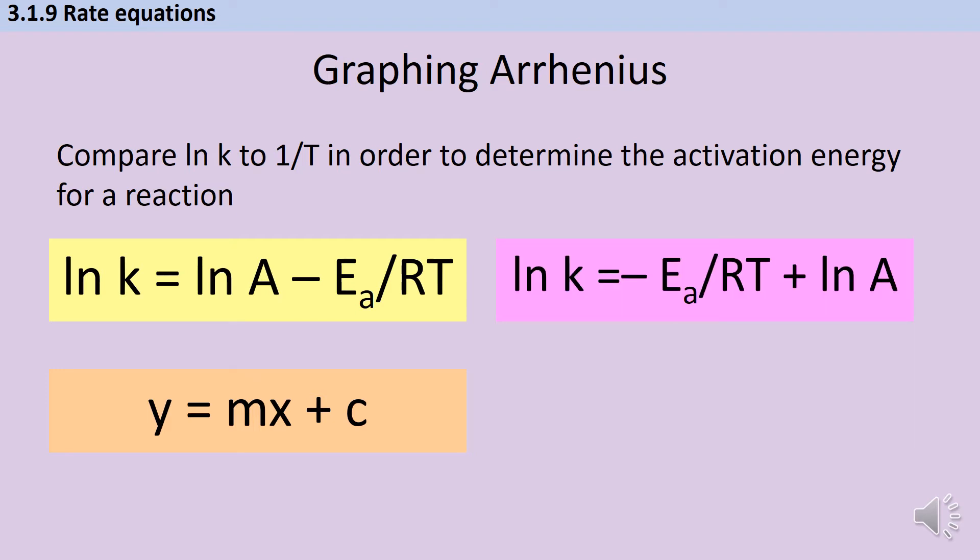We now make that natural log of k is negative activation energy over RT plus the natural log of A. You can see there that the natural log of A is going to be your c term, it's going to be your intercept term. And then if we use 1 over T as our value for x, if we put that on the x-axis, then in that case the gradient m is going to be negative activation energy divided by R.